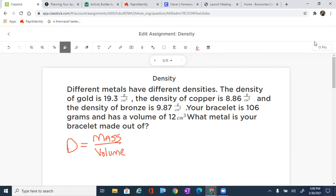In this problem, it's asking us to calculate the density of our bracelet so that we can compare it to these other metals that are out there. So that's what we are going to do. It says your bracelet is 106 grams. This is going to be our mass. And then it gives us our volume, which is 12 cubic centimeters.